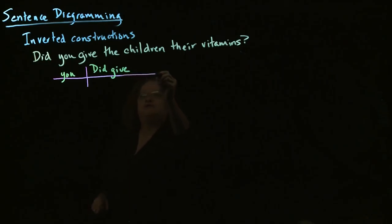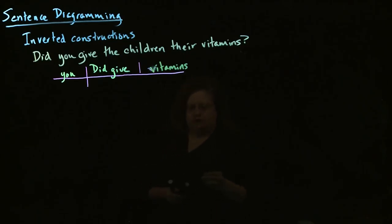We have a direct object and an indirect object. We have 'vitamins' as the direct object and 'children' as the indirect object.